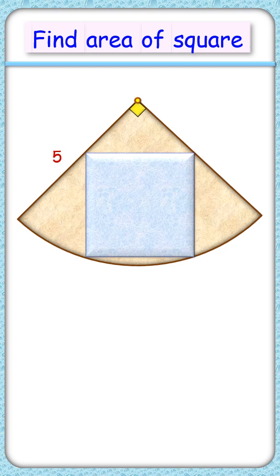We have a square inside a quadrant with radius 5 cm. The exciting part is that with this limited information we have to find the area of the square. Let's check the solution.